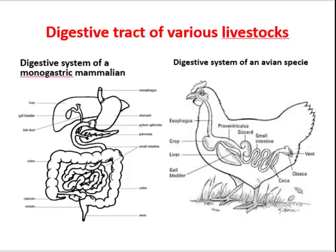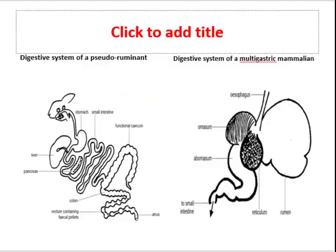This slide shows the digestive tract of various livestock. The first one is the digestive system of a monogastric mammalian, while the second one shows the digestive system of an avian species. This slide shows the digestive system of a pseudo-ruminant, and also the digestive system of a multigastric mammalian.